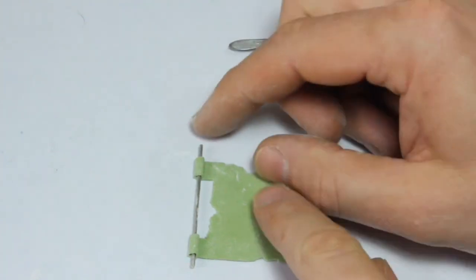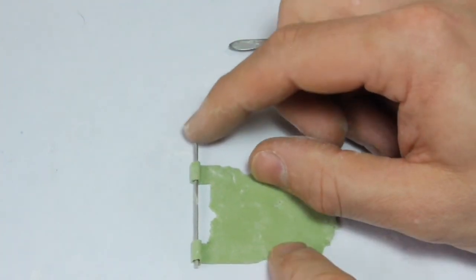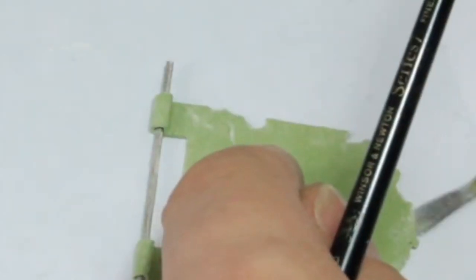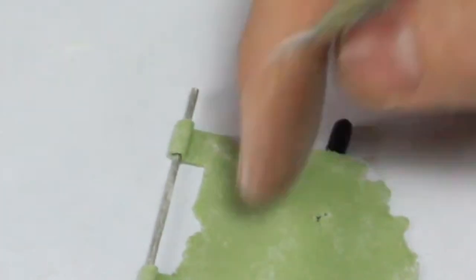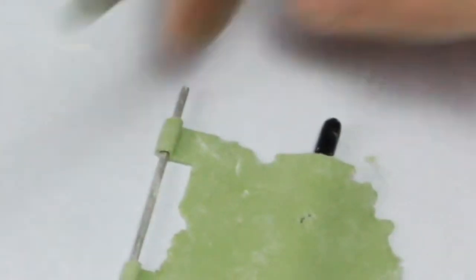Double-check you can slide the pole out but leave it in until the putty dries. To create some flow to your banner, use something like a brush to push under the center and create a ridge. This will make it look like it's blowing in the wind.